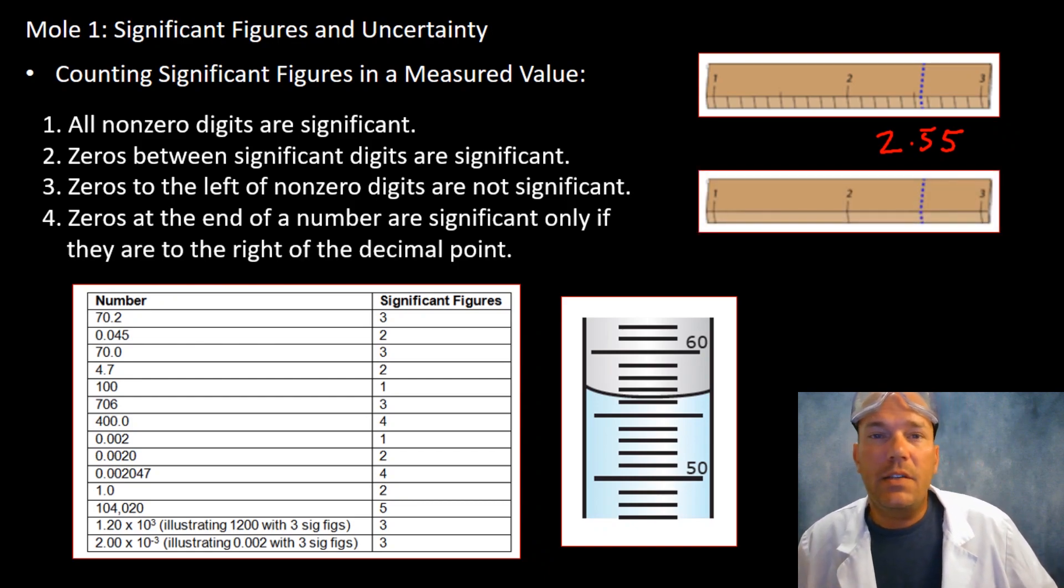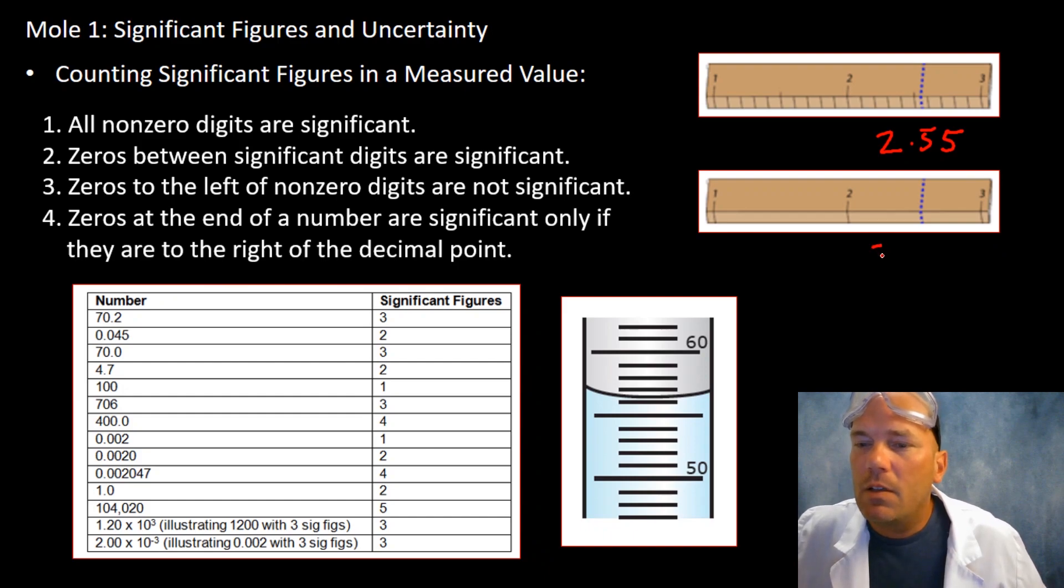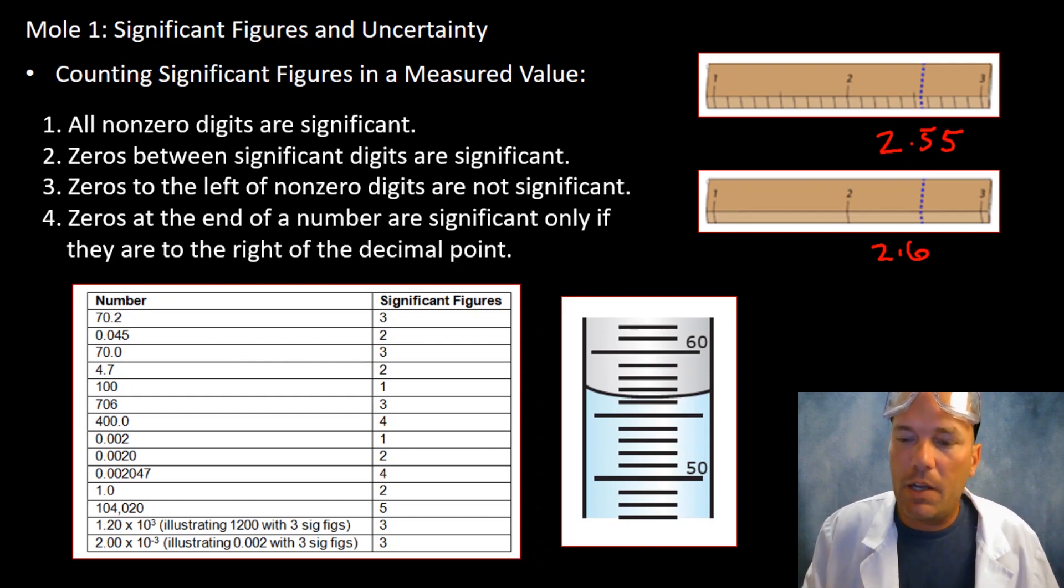In this case here we do not have increments between 2 and 3. If we were to estimate this number we would say it's a little bit bigger than 2.5, so maybe 2.6 because we can only go that one digit into the uncertainty. We are uncertain - this could be 2.5, could be 2.7, could be 2.65, we don't know. So 2.6 would be our answer in that instance.